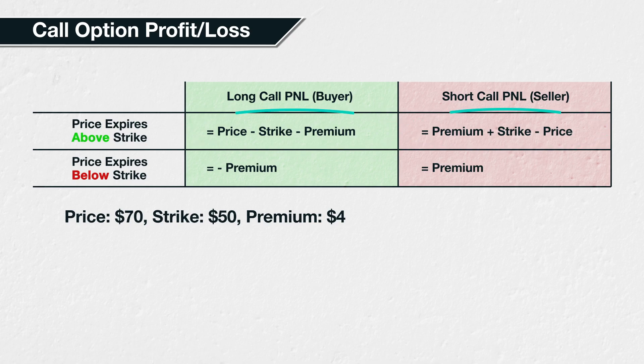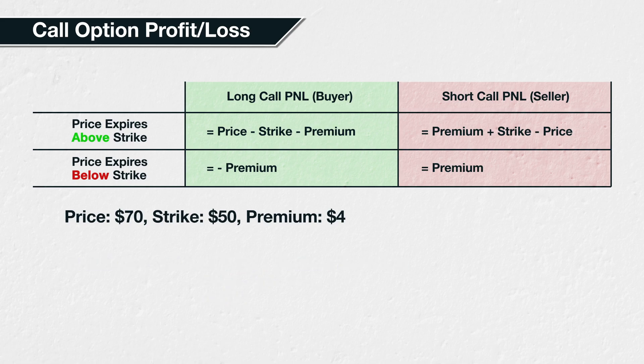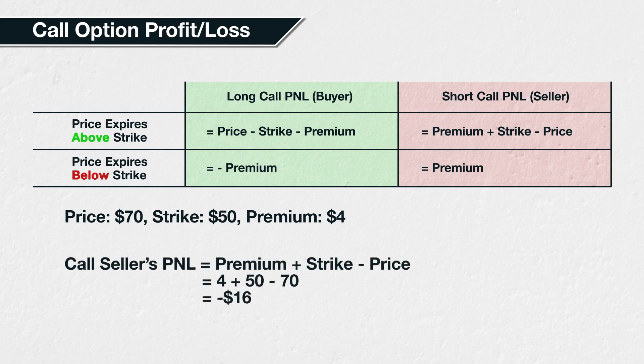The buyer of the call option has a profit or loss of price minus strike minus premium, which equals $70 minus $50 minus $4, which equals $16. So the buyer has a profit of $16 per share. The seller of the call option has a profit or loss of premium plus strike minus price, which equals $4 plus $50 minus $70, which equals minus $16. So the seller has a loss of $16 per share.